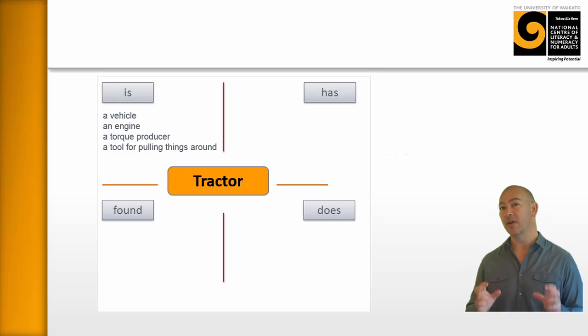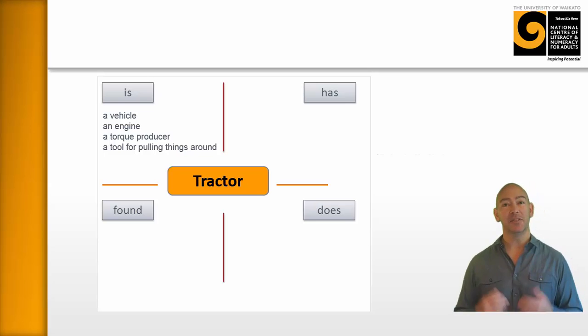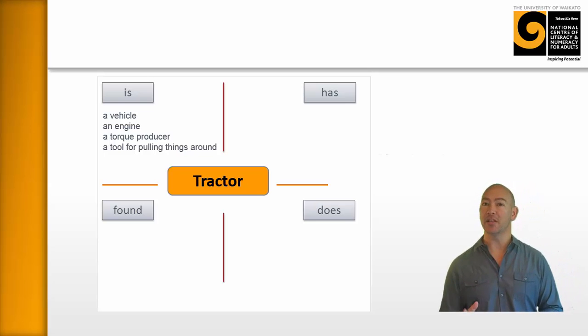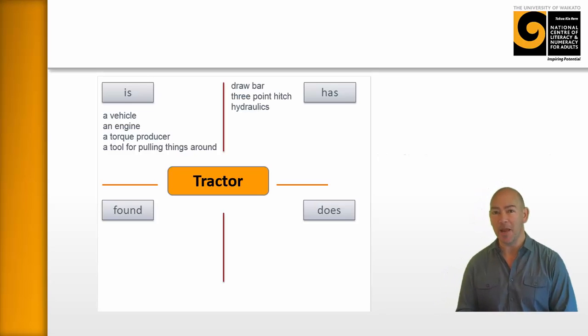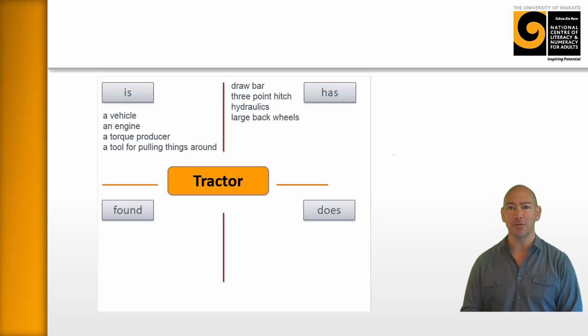The learners were then asked to generate some ideas around what a tractor has. And these are some of the words that they came up with. A tractor has a draw bar, a three-point hitch, hydraulics, large back wheels, sometimes large front wheels as well.